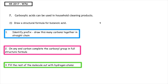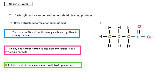The next part of this question asks us to draw the structural formula for butanoic acid. Remember we have to identify the prefix — that's 'but', which tells us we have four carbon atoms joined together. On an end carbon we do our carboxyl group, which is our double bond O and OH, and we fill the rest of the molecule out with hydrogen atoms, making sure each carbon has only got four bonds. This is how we draw the full structural formula for butanoic acid.